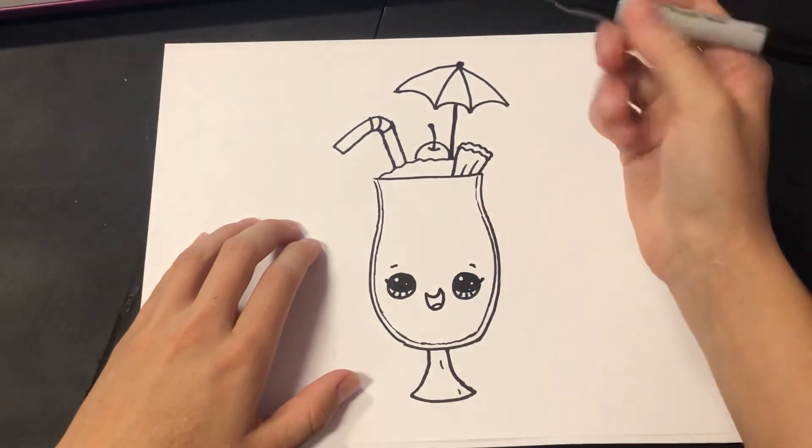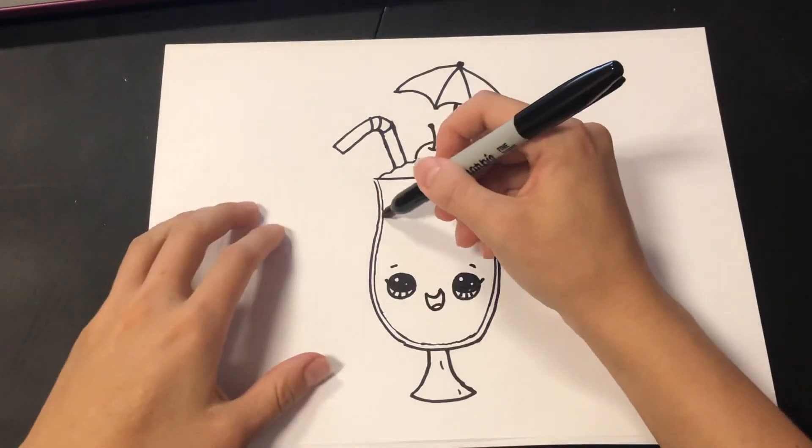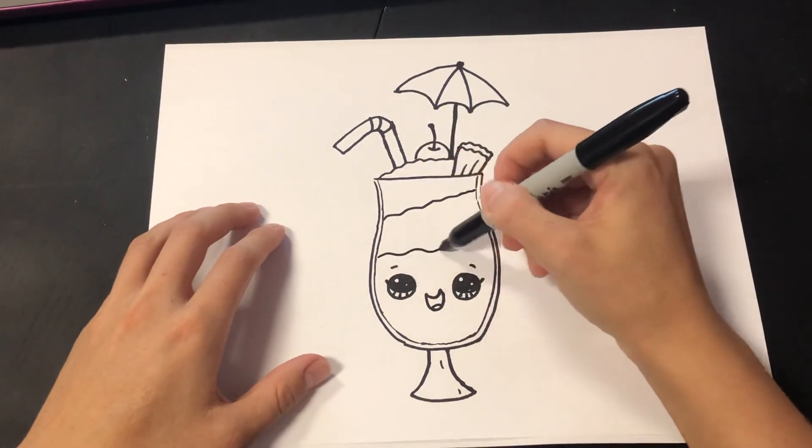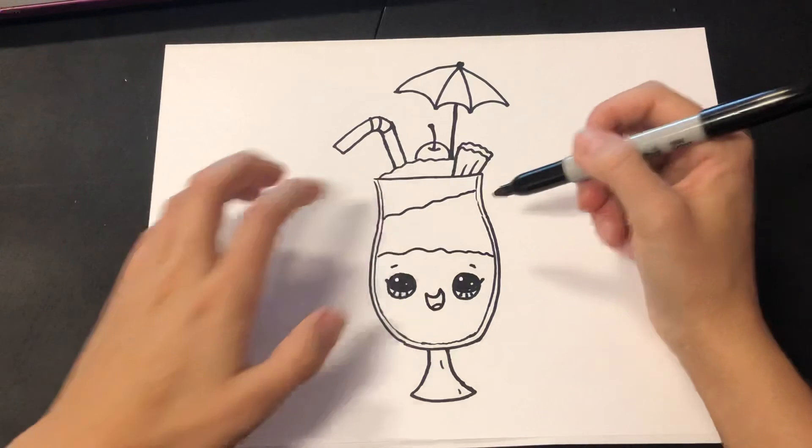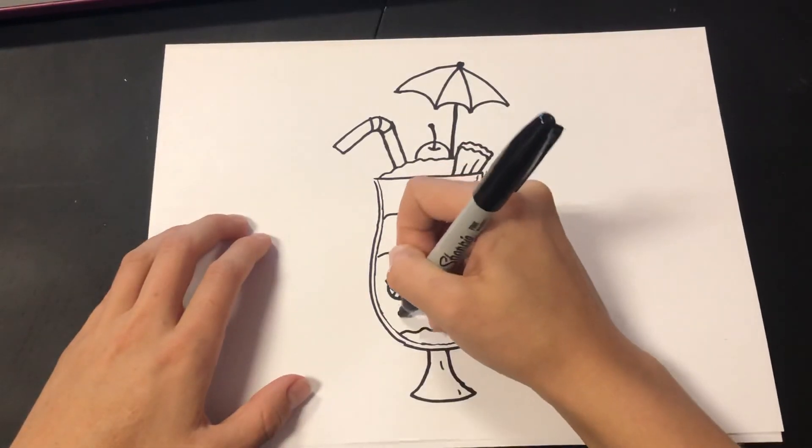And then for our drinks, what she does is she's going to layer it. So she's going to put some wavy lines here and then each one is going to be a different color. I'm going to add a little blush down here. And there you have it.